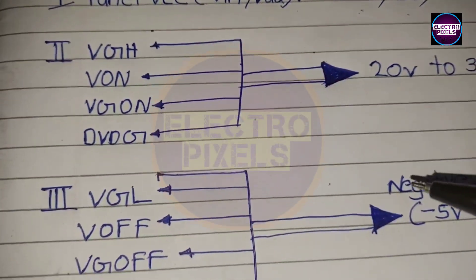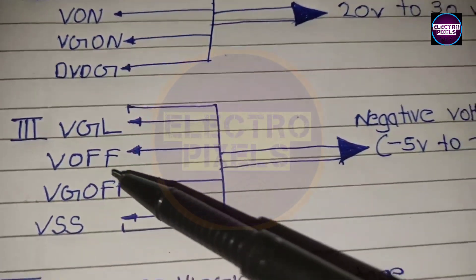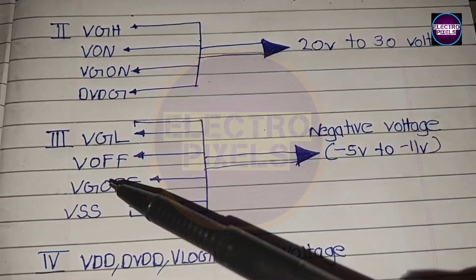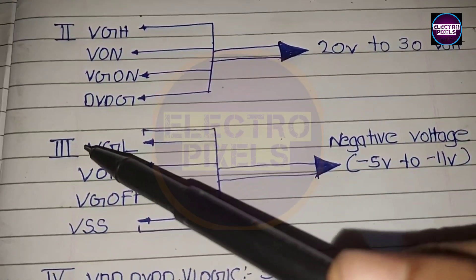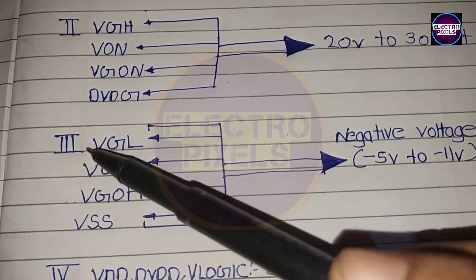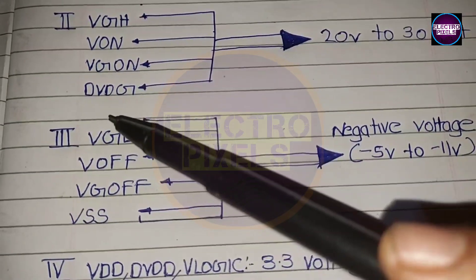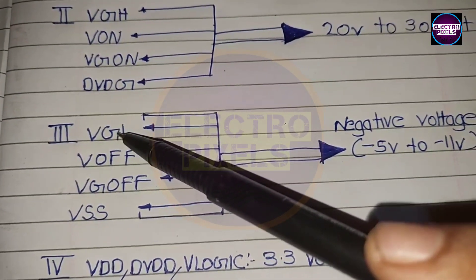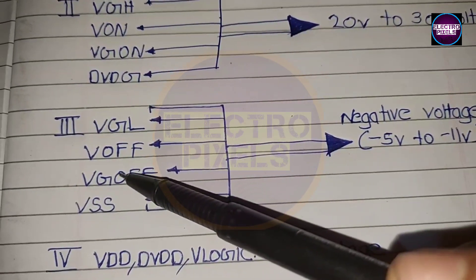The third one is the VGL voltage, also called as VOFF, VG off, VSS, etc. This voltage is completely a negative voltage and it ranges from negative 5V to negative 11V approximately, according to different panel manufacturers' specifications.